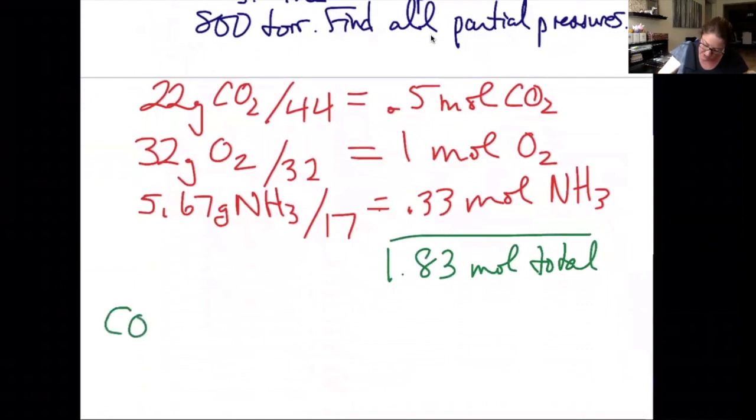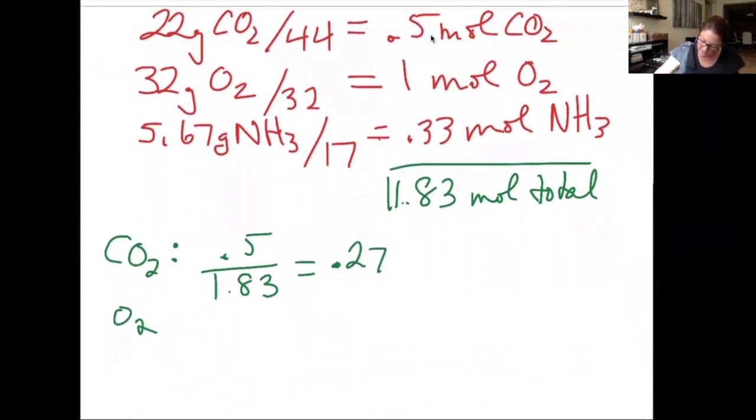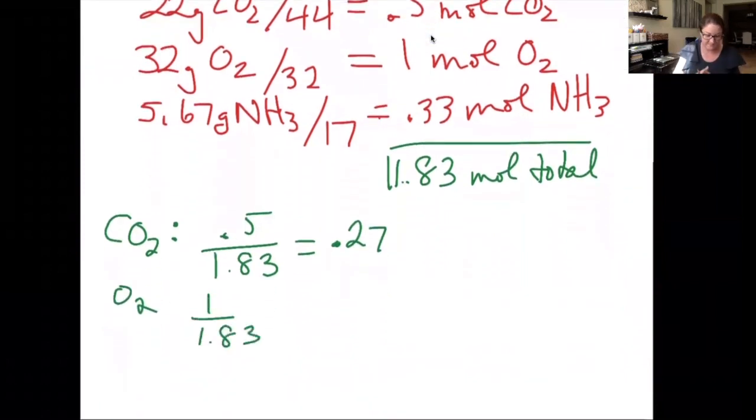So for CO2, if I want the mole fraction of CO2, I do its moles over the total. 0.5 divided by 1.83 gives me a mole fraction of 0.27. For O2, it's 1 over 1.83, which gives me 0.55 as my mole fraction.